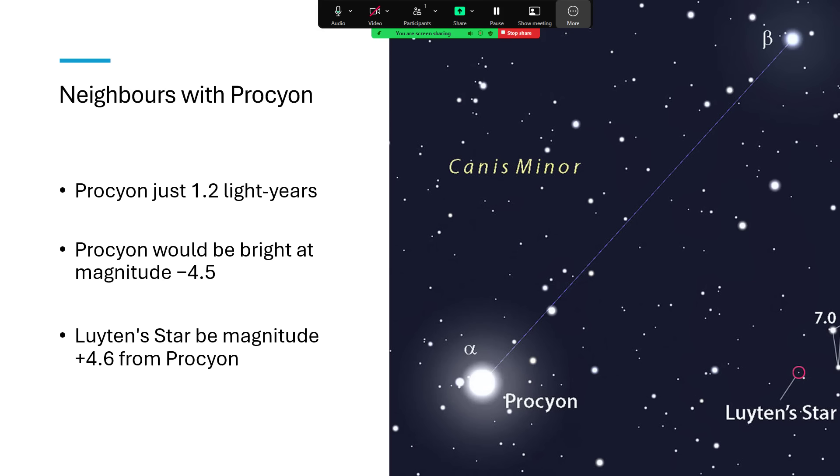In space, its nearest neighbour is in fact Procyon, so the line of sight of putting it in Canis Minor is not entirely unfair. It's actually just within 1.2 light years of Procyon at roughly the same distance. I think Procyon is just a little bit nearer.